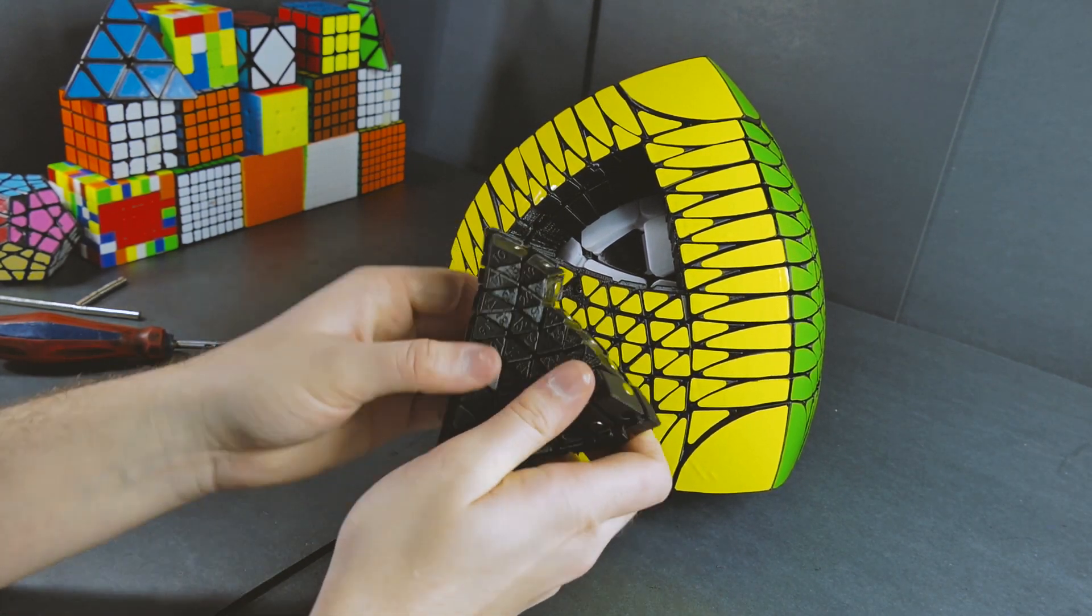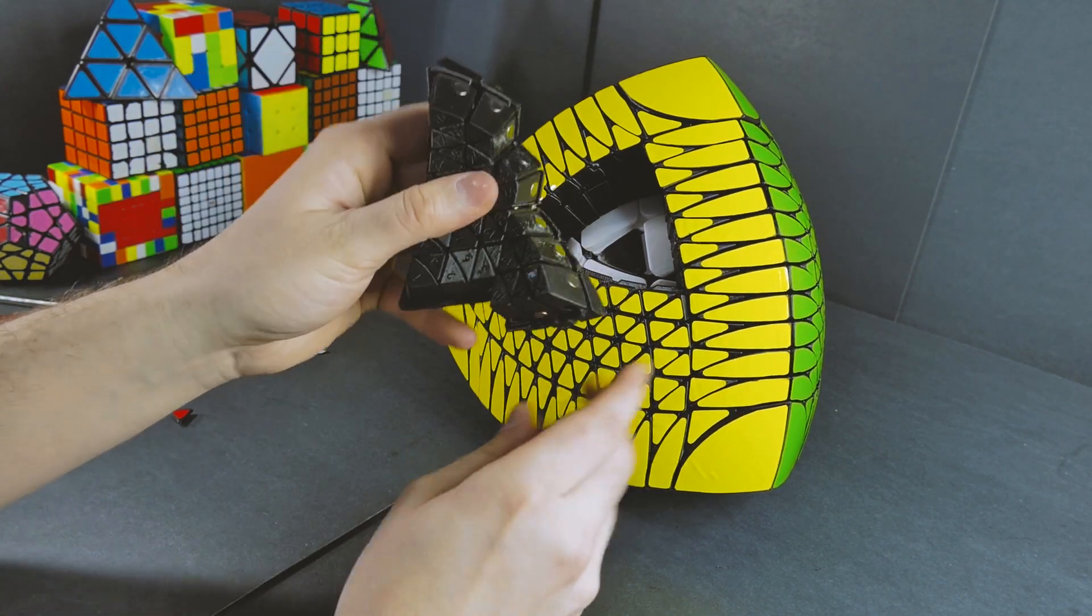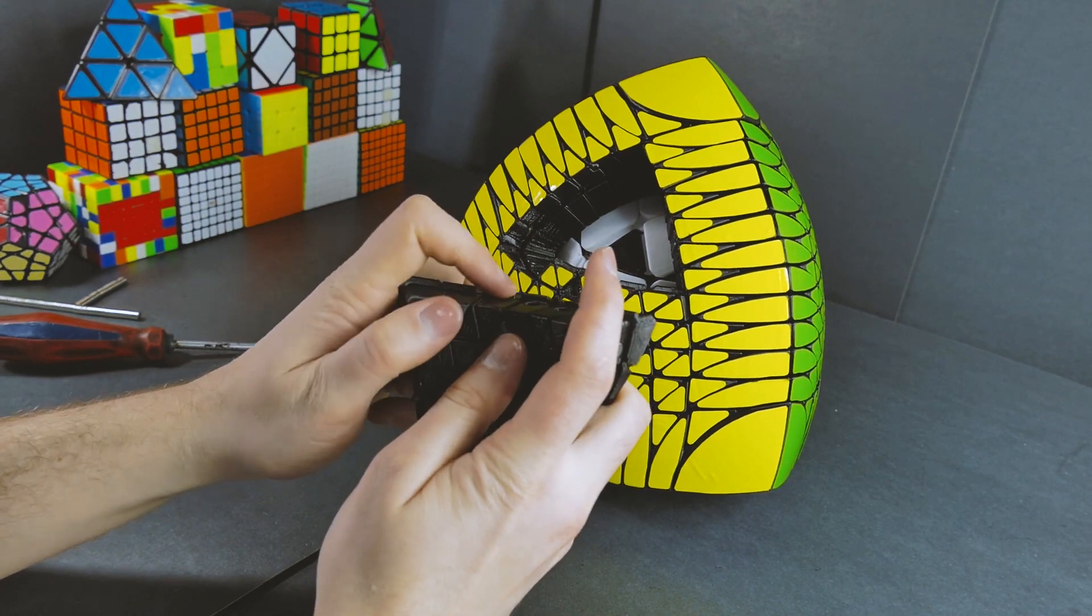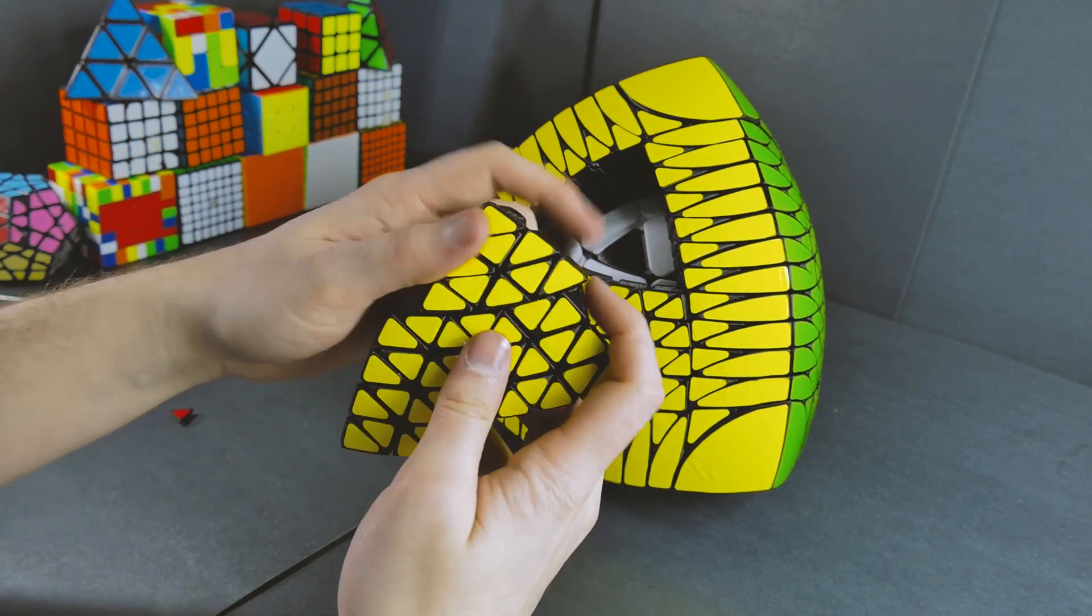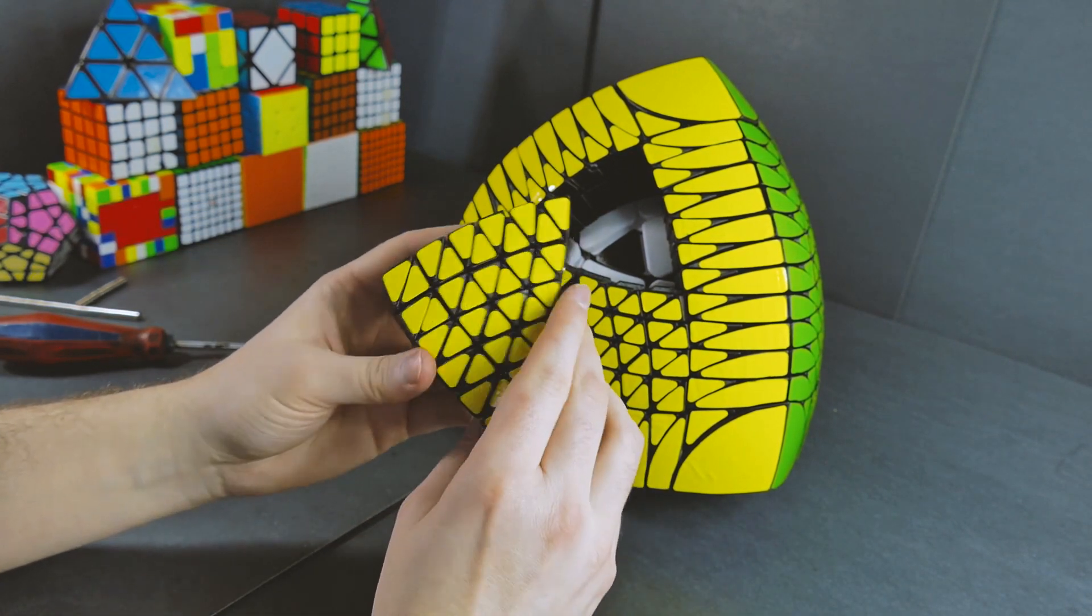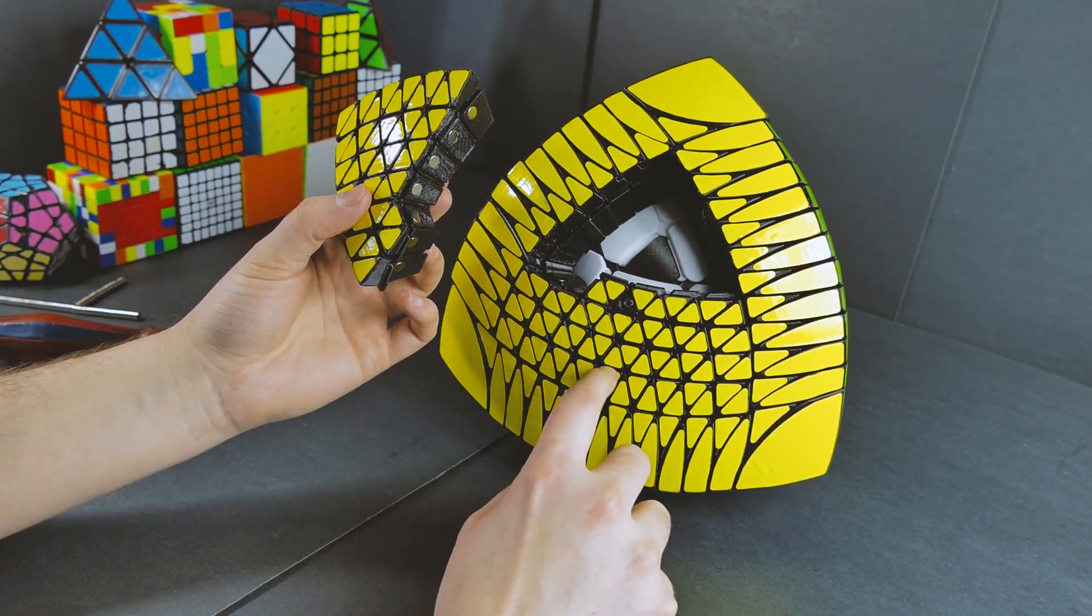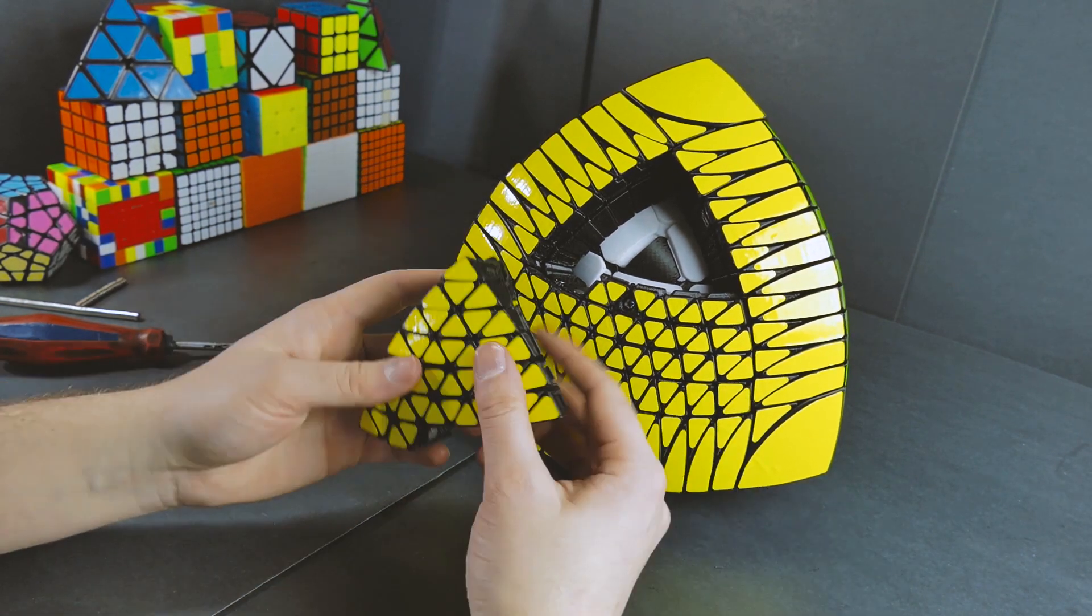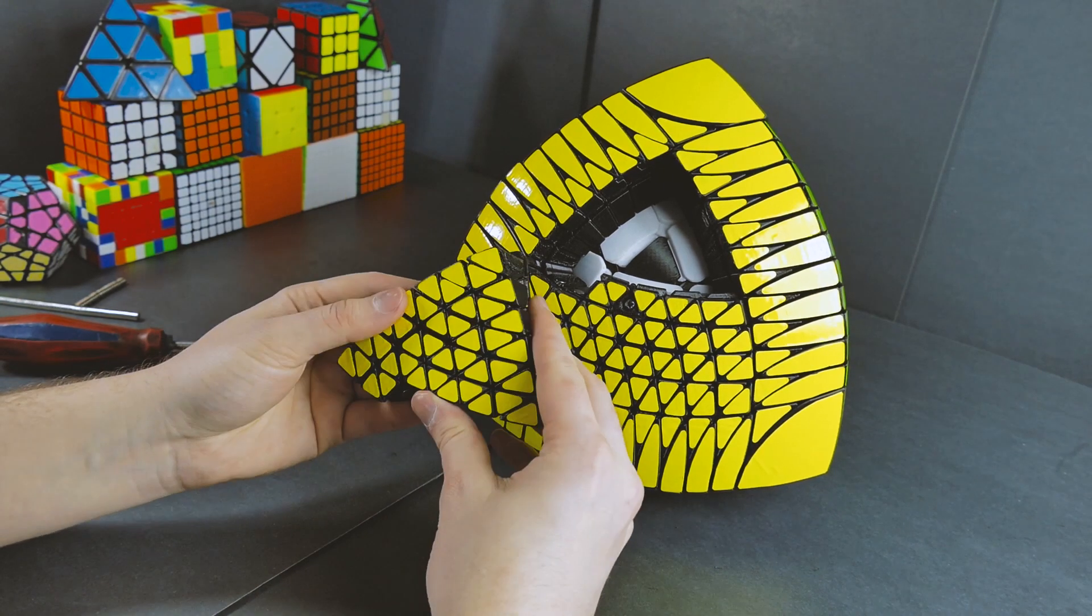So during a turn, they sort of click multiple times. So each turn has a little click, they dislocate, and then they'll click into a new position a couple times throughout a turn. This does add quite a bit of friction, as you might imagine. With this layer right here, you have a ton of magnets that need to be overcome.